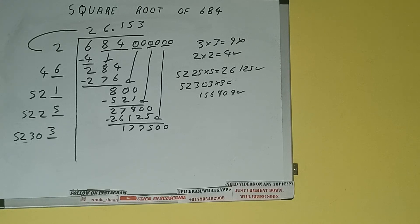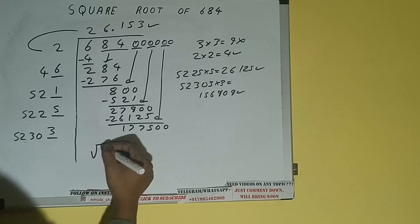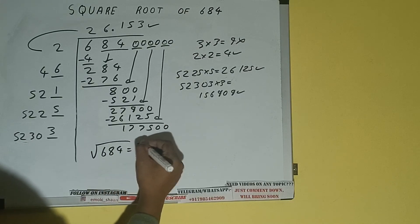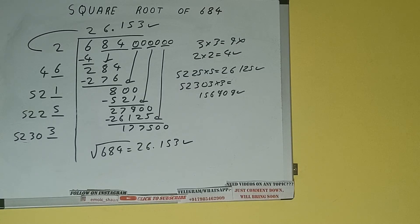But we don't need to calculate because we got the answer correct up to 3 decimal places. So the square root of 684 will be 26.153. That will be the answer. So this is all about the square root of 684.